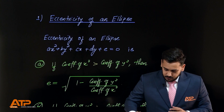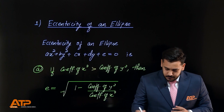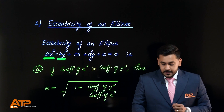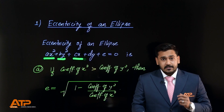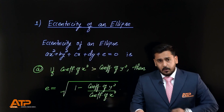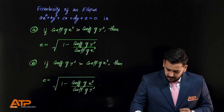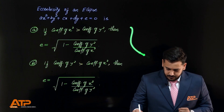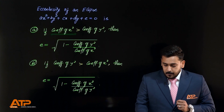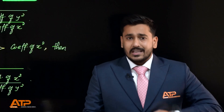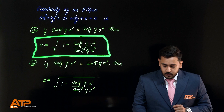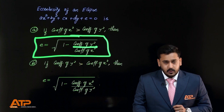If you want to find eccentricity of an ellipse ax² + by² + cx + dy + e = 0, you just need to know two formulas. If the coefficient of x² is more than the coefficient of y², then eccentricity will be the square root of one minus (coefficient of y²) over (coefficient of x²).